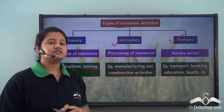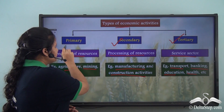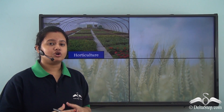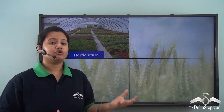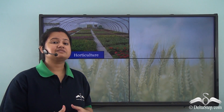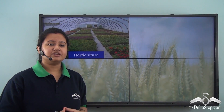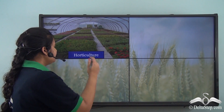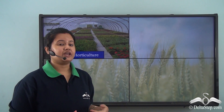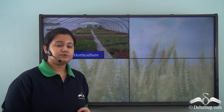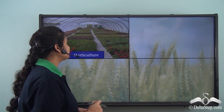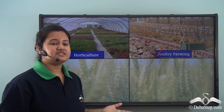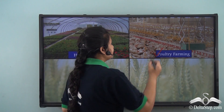Agriculture is a broader concept that not only includes cultivation of crops but also fruits, vegetables, and raising of livestock. Based on this, there are different names associated with each type of cultivation. For example, horticulture refers to garden cultivation, especially growing of fruits, vegetables, ornamental plants, and flowers.